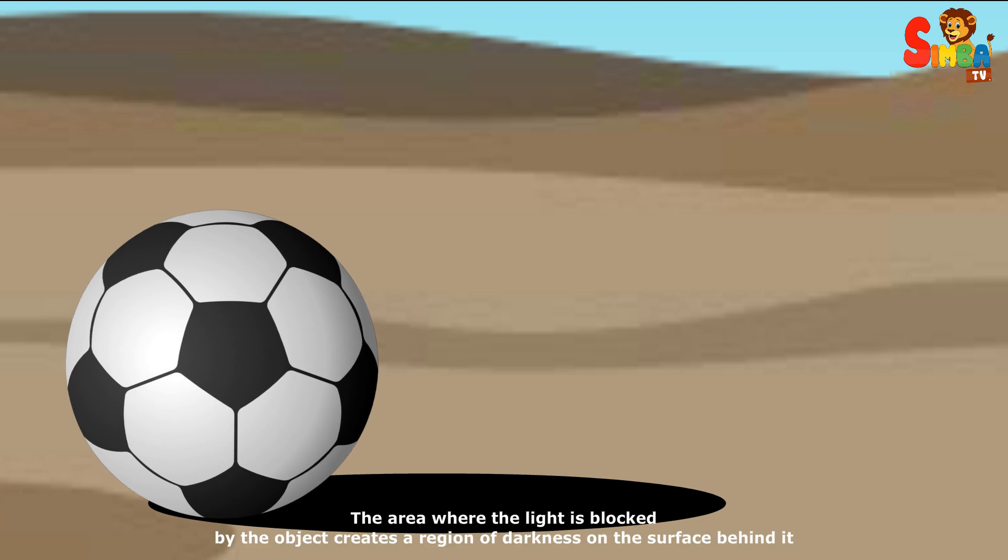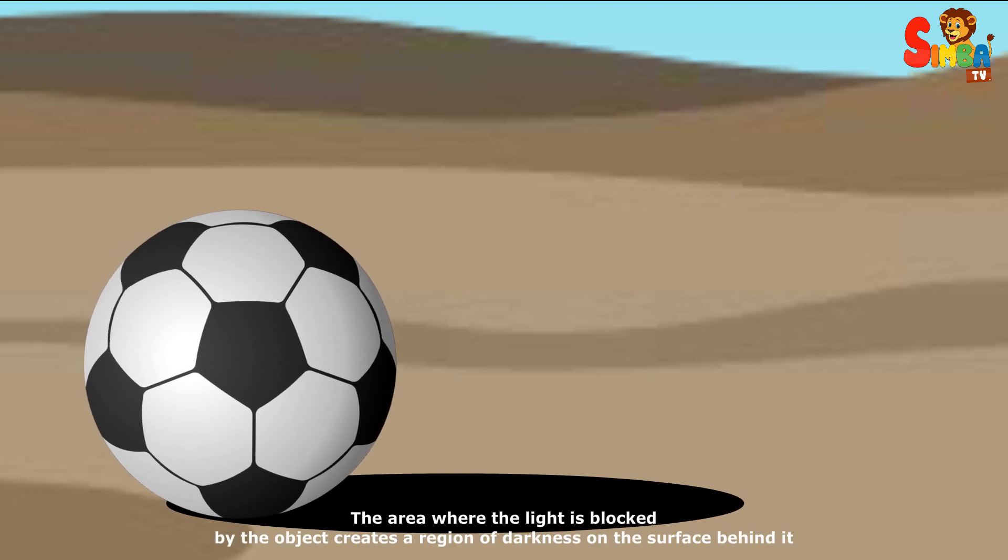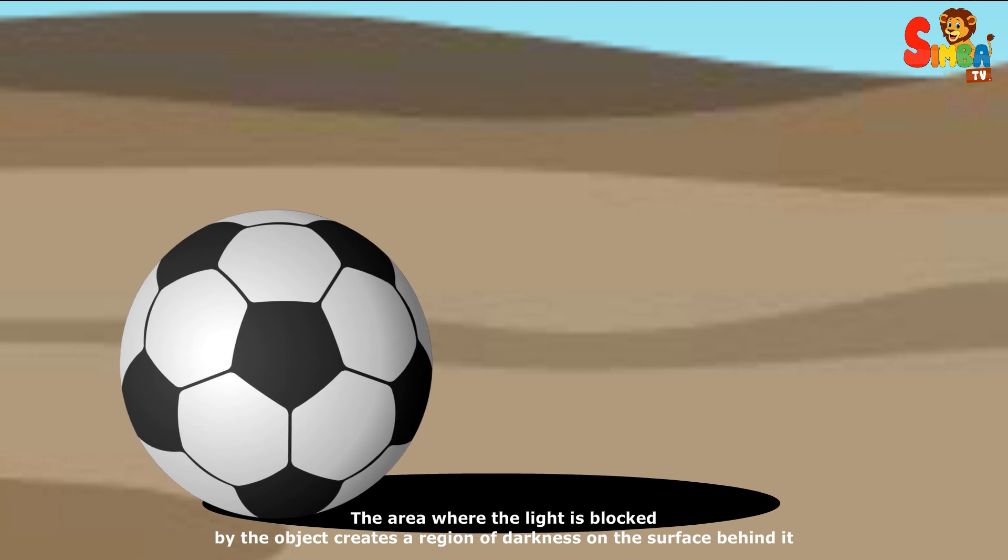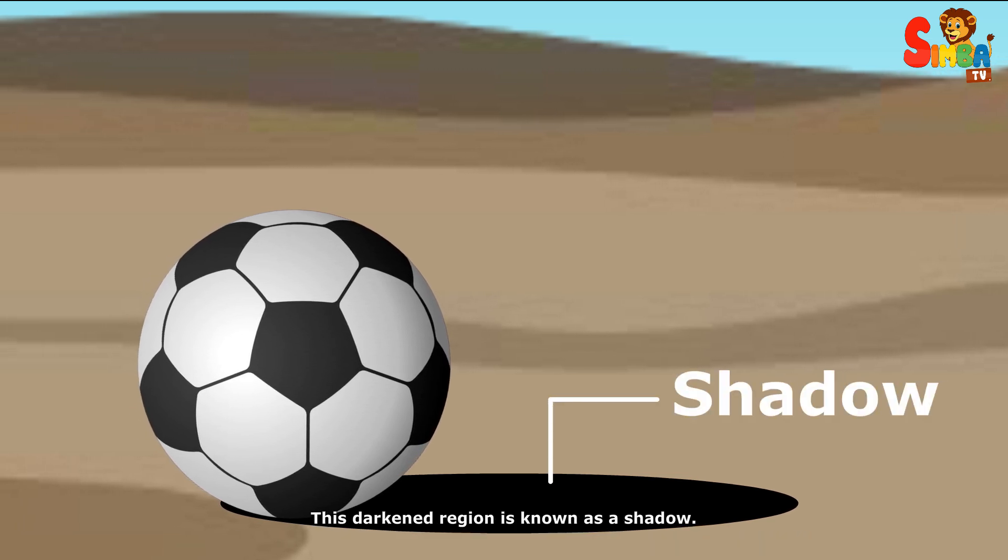Shadow formation. The area where the light is blocked by the object creates a region of darkness on the surface behind it. This darkened region is known as a shadow.